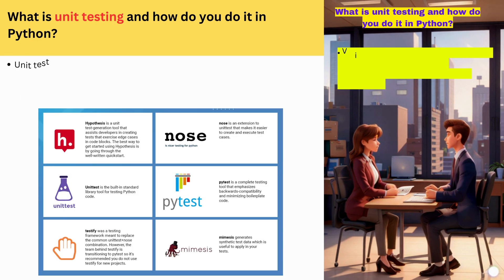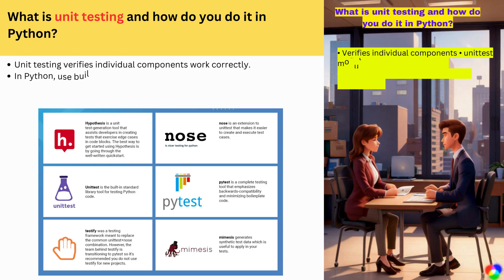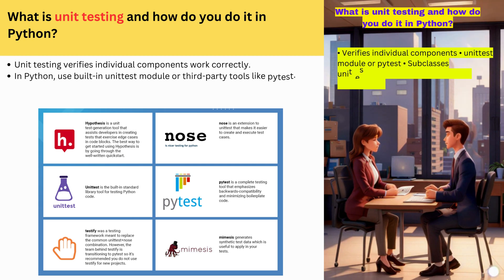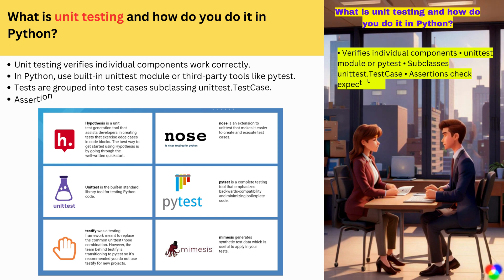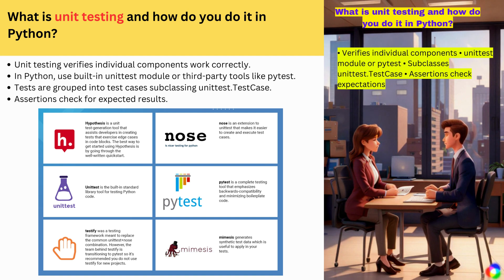What is unit testing and how do you do it in Python? Unit testing verifies individual components work correctly. In Python, use the built-in unittest module or third-party tools like pytest. Tests are grouped into test cases subclassing unittest.TestCase. Assertions check for expected results.